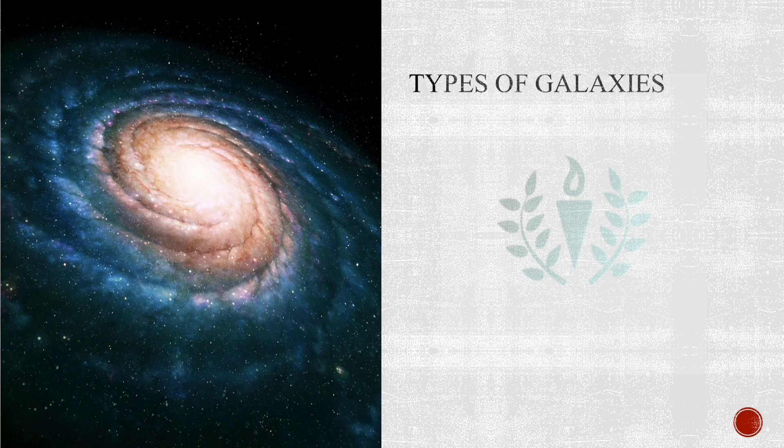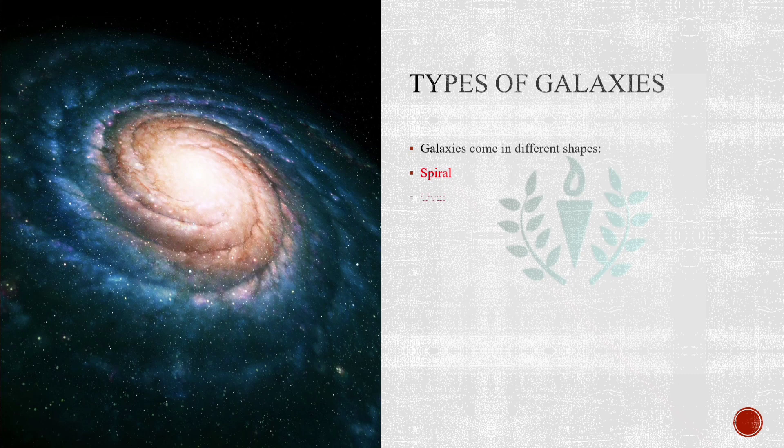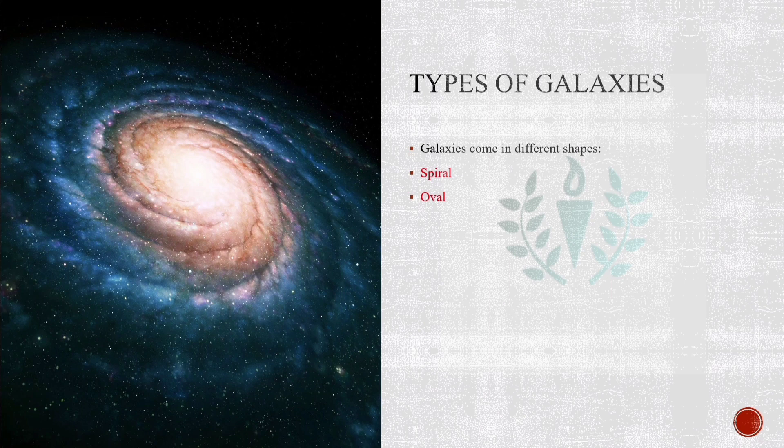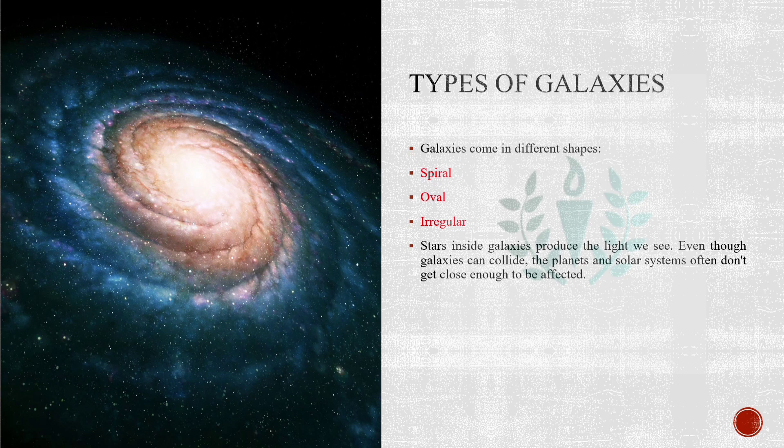From here you can imagine how big actually the universe is. Given that we now have the understanding of galaxies, let us talk about the types of galaxies. Astronomers classify galaxies into three major categories: spiral, oval or sometimes called elliptical, and irregular. These galaxies span a wide range of sizes from dwarf galaxies containing as few as 100 million stars to giant galaxies with more than a trillion stars.